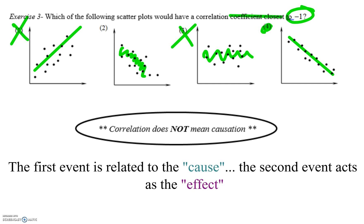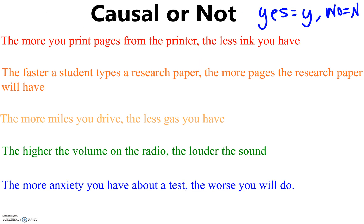And then something else that we need to look at and kind of get familiar with is this phrase right here: correlation does not mean causation. So because something has a really strong relationship, whether it be positive or negative, does not mean it caused one or the other. So the first event that they give you is related to the cause, while the second event that they give you is related to the effect. So we're going to look at some quick examples that will help you for the topic of understanding correlation relationships. So we're going to decide whether it's causal or not. Causal just means it follows a cause and effect that makes sense.